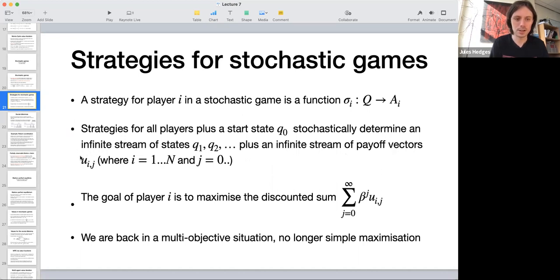I'm writing like this: now we have two indices. i is going to vary over the players, so i goes from one to n, and j is varying over the stages, so j goes from zero to infinity.